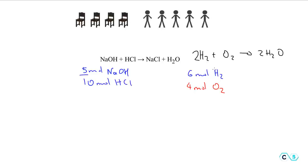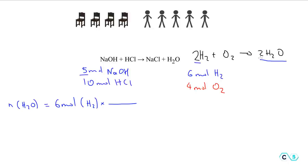We can check by determining how much water will be formed from each reagent independently. For hydrogen, the moles of water produced equals 6 moles of H₂ multiplied by the mole ratio: every 2 moles of H₂ gives 2 moles of H₂O. Canceling units, 6 moles of hydrogen gives us 6 moles of water.